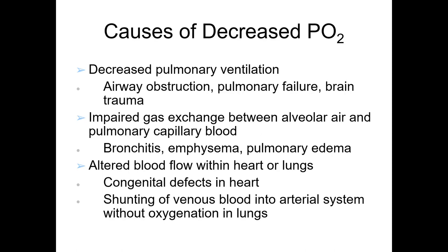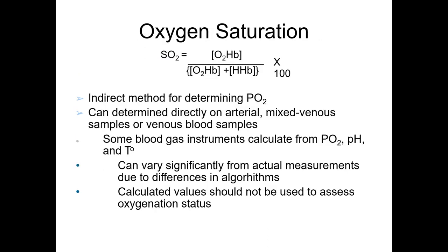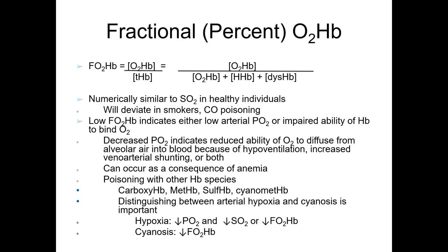Assessment of oxygen status includes oxygen saturation (SO2), measured as fractional percent of oxyhemoglobin, with trends assessed by pulse oximetry, and partial pressure of oxygen. Oxygen saturation is an indirect method for determining pO2; it can be determined directly on arterial, mixed venous, or venous blood samples. Some blood gas instruments calculate pO2, but pH and temperature can vary significantly from actual measurements due to differences in algorithms, so calculated values should not be used to assess oxygenation status. The fractional percent of oxygenated hemoglobin is numerically similar to oxygen saturation in healthy individuals but will deviate in smokers or carbon monoxide poisoning.